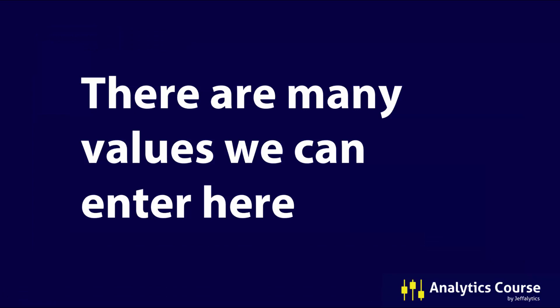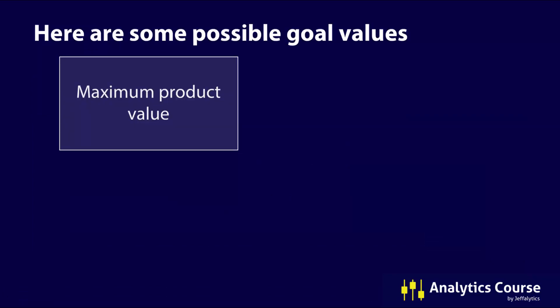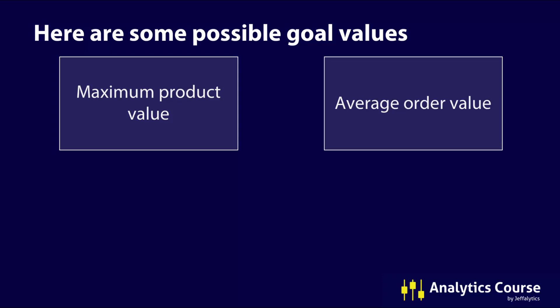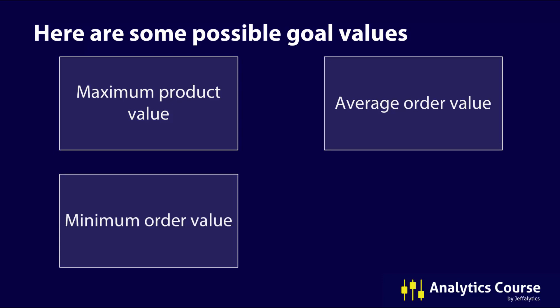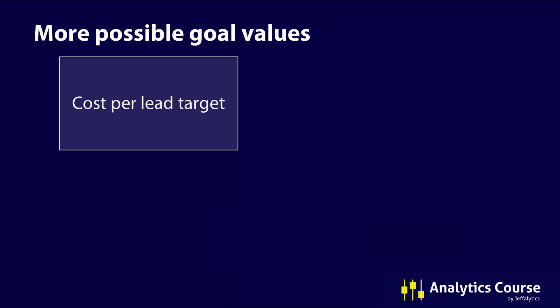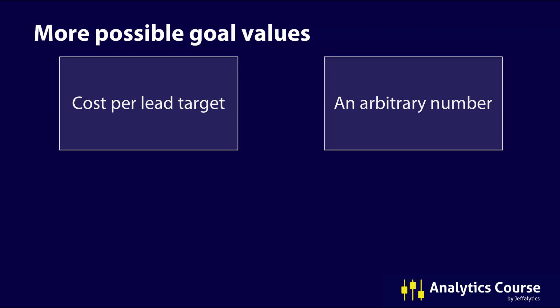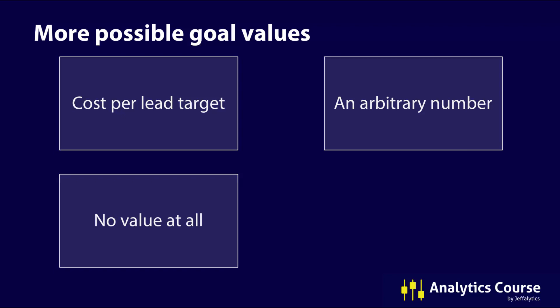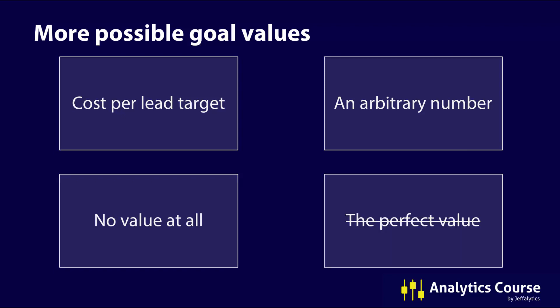There are many values we can enter into our goal values: the maximum product value of all products in our catalog, our average order value, the minimum order value, the average lead value, or the cost per lead target. We could put an arbitrary number in there, which is what a lot of companies end up doing — they just put in some kind of number they're comfortable with even though it's not right. You could put no value at all, which I don't really recommend, or you could put in the perfect value — which probably doesn't exist, and that's why I crossed it out.